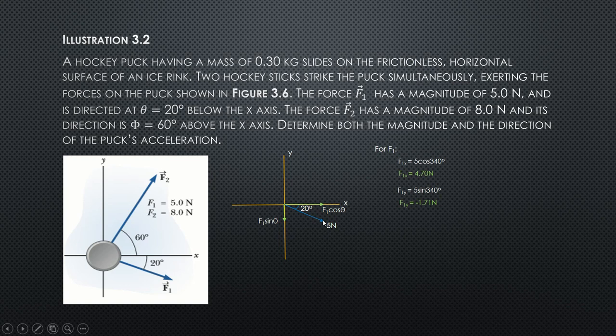Now for F2. Based on the given 60 degrees, the y component and x component lie along the positive axis. Solving for the x and y components of F2: 8 cosine 60 degrees from positive, that's 60 degrees, so you get 4 N. For the y component of force 2, 8 sine 60 degrees gives you positive 6.93 N.